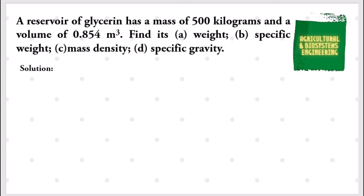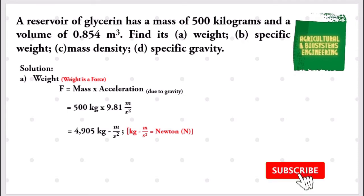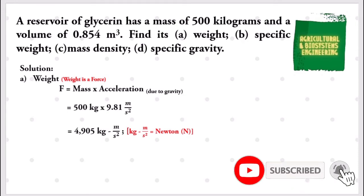We will begin solving for the value of our weight. To solve for weight, we have to take note that weight is also a force. So the formula we are going to use is force equals mass multiplied by acceleration due to gravity. We substitute the values: 500 kilograms multiplied by 9.81 meters per square second gives us 4905 kilogram-meters per square second.